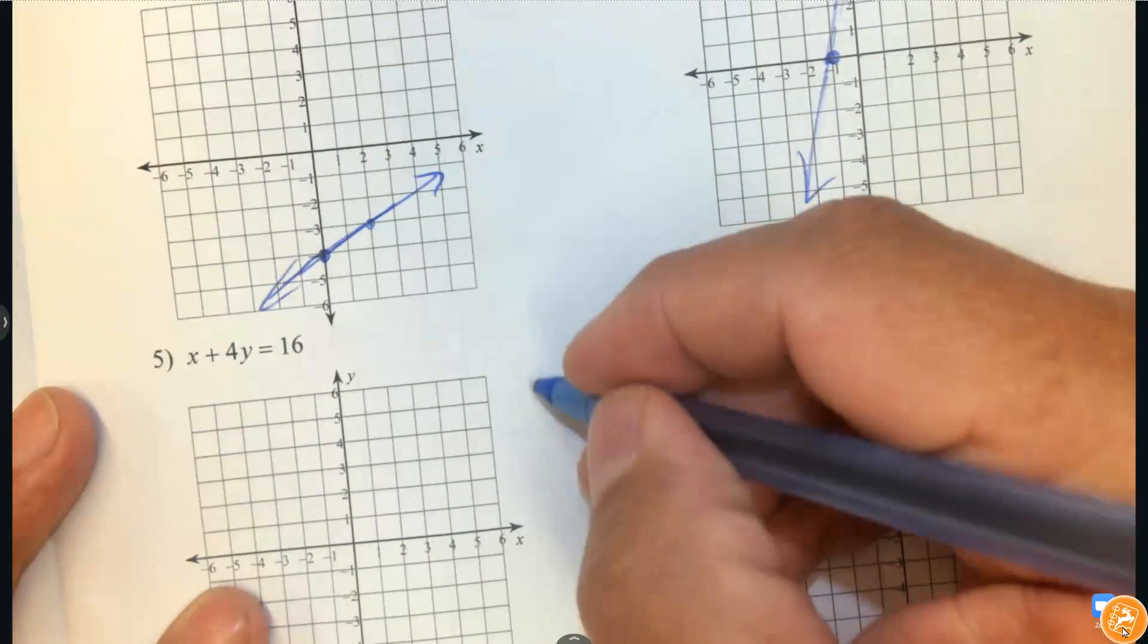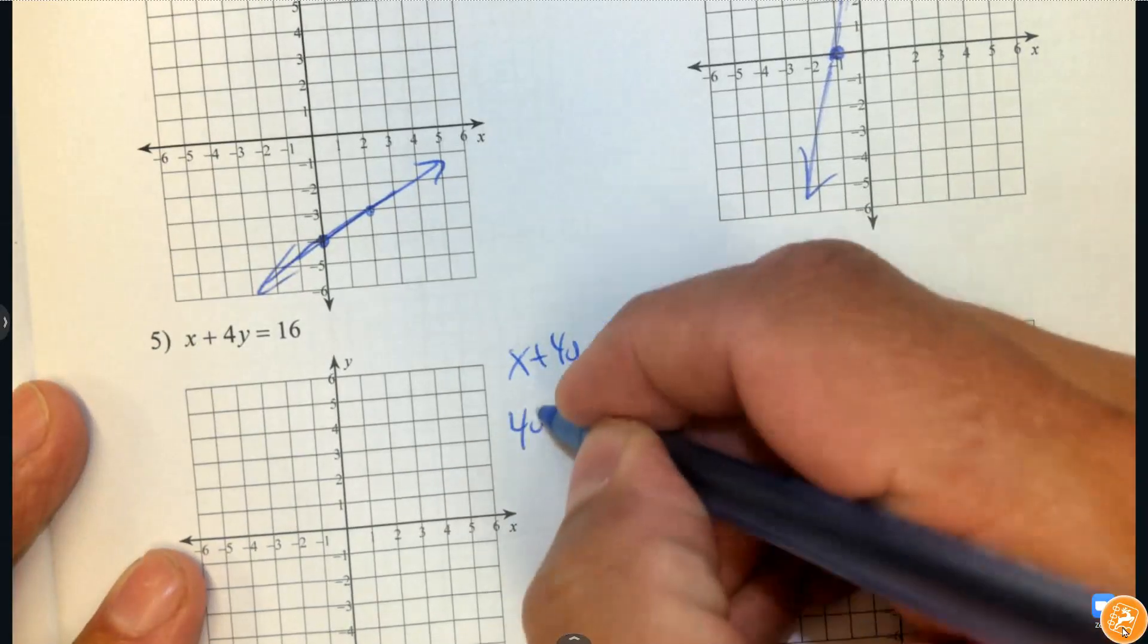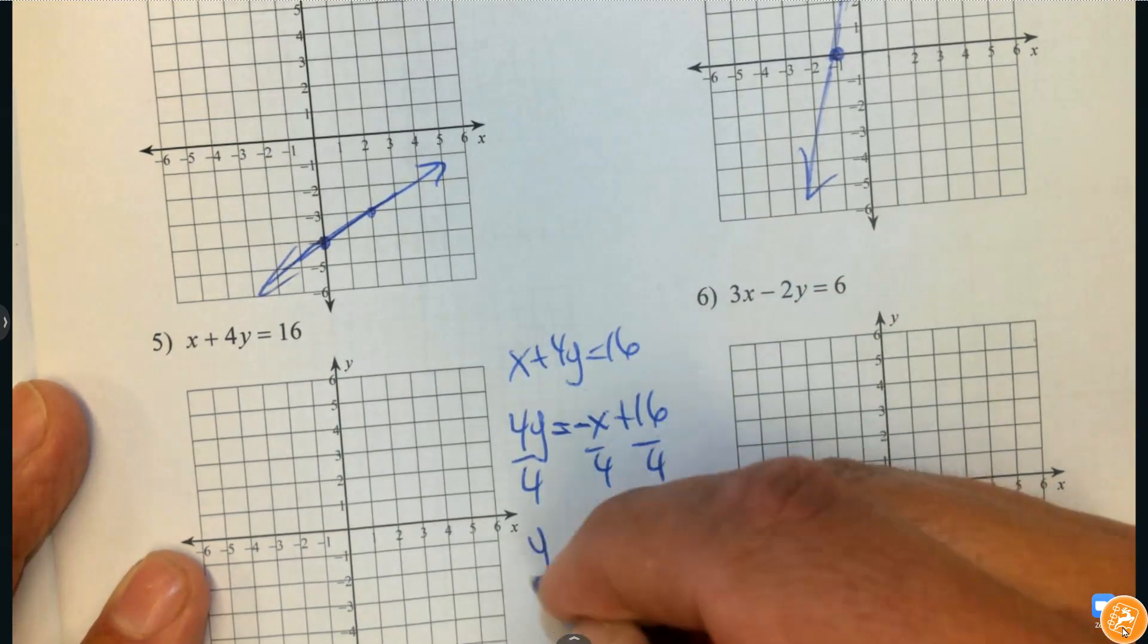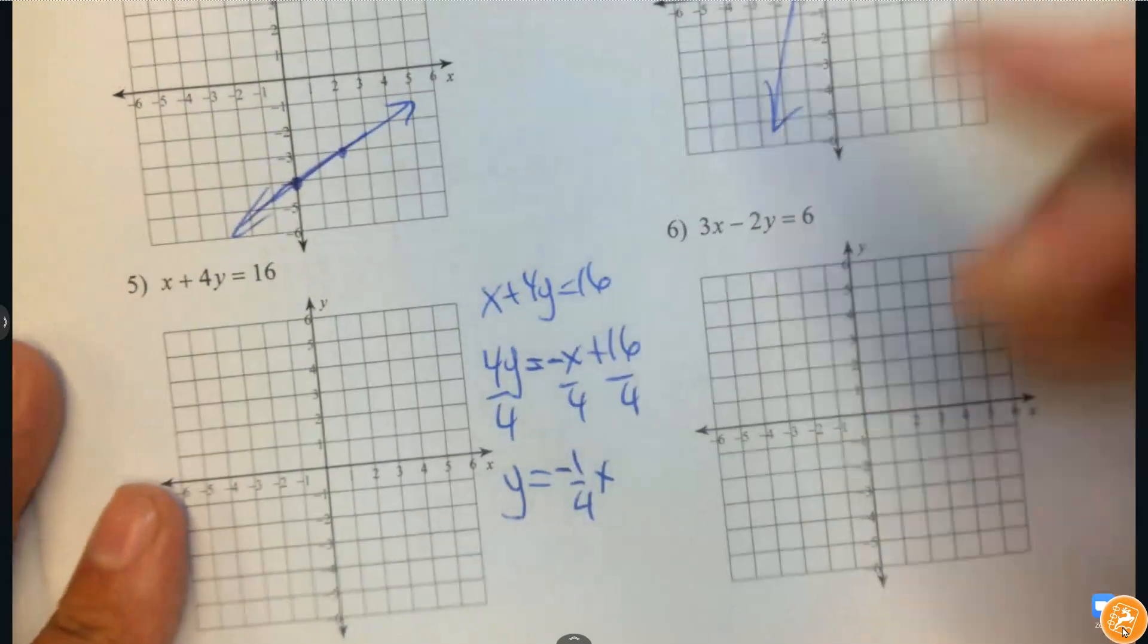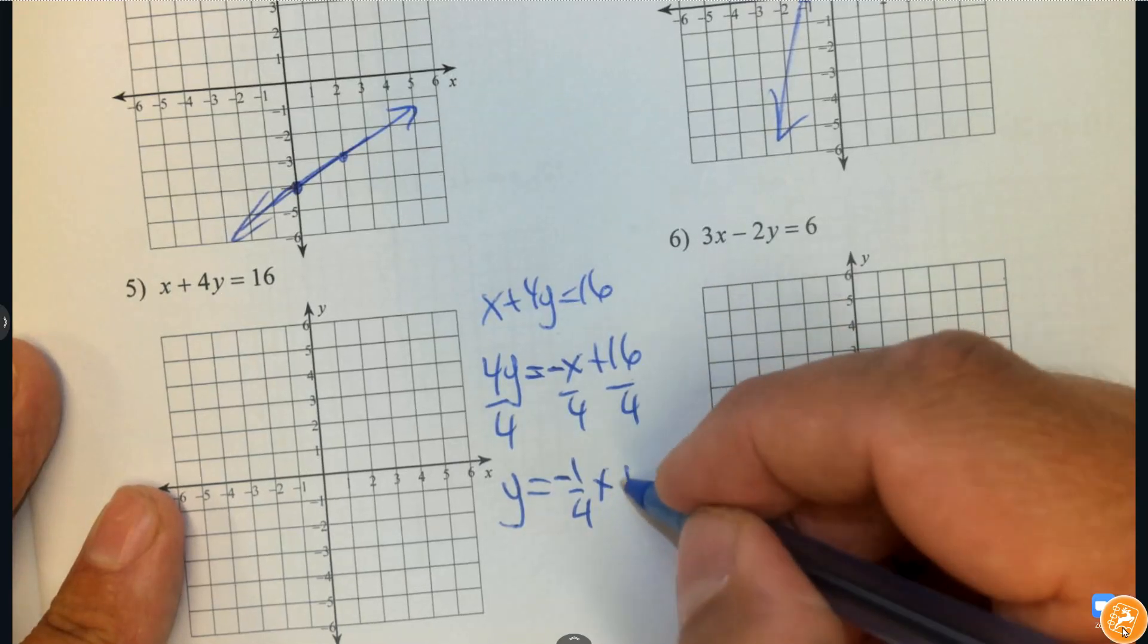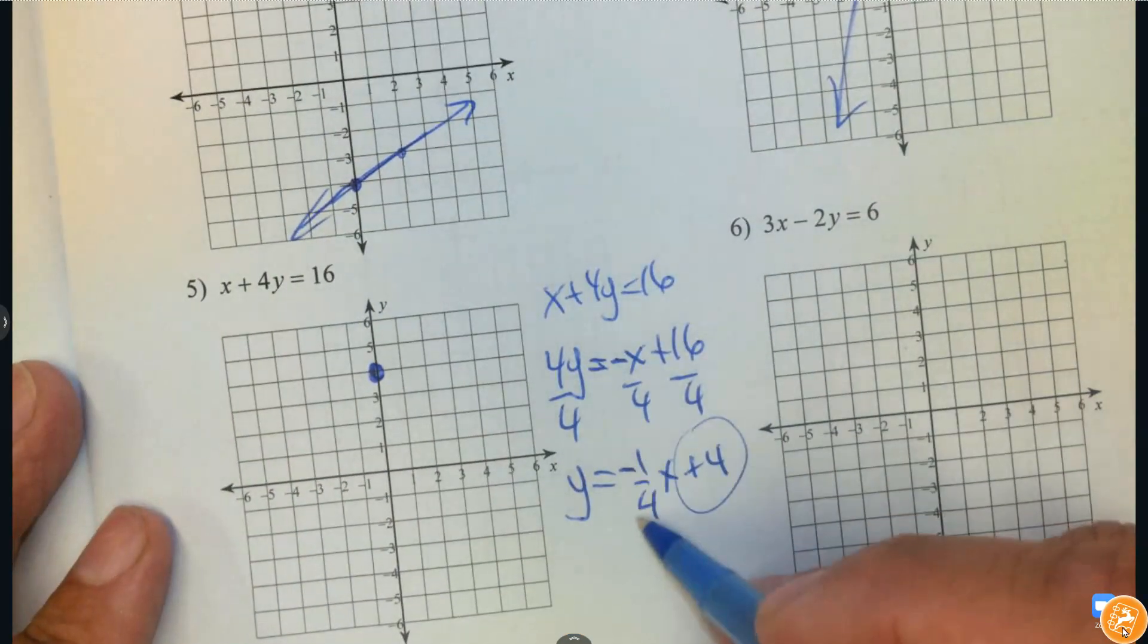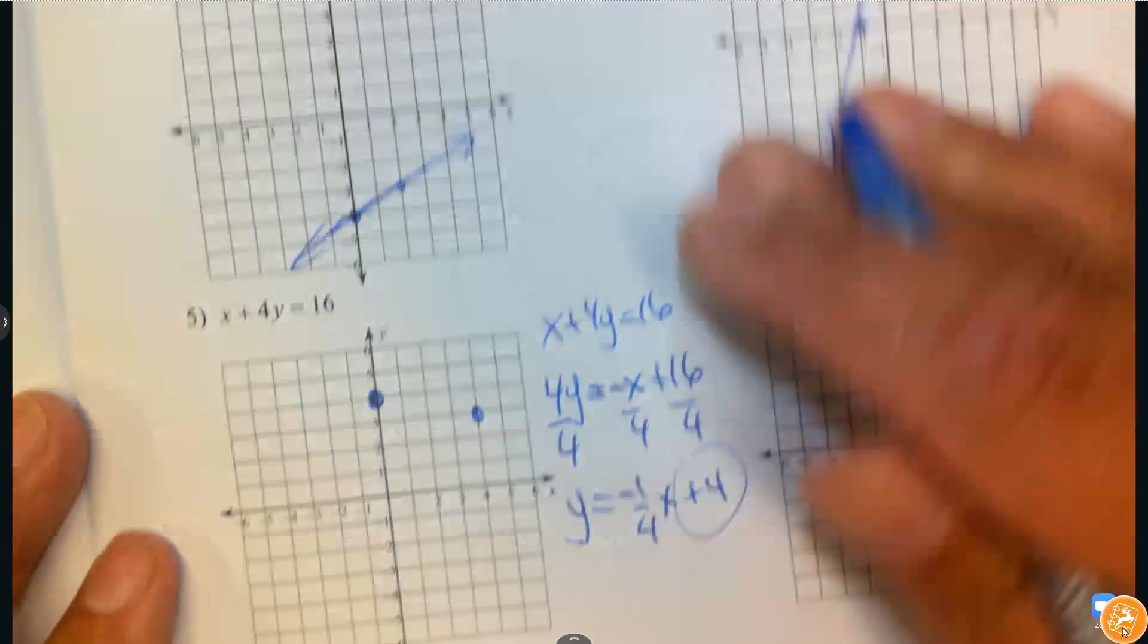Number 5 again. Let me show it again to you. So I'm going to subtract x to the right side. And I'm going to divide everything by 4. So I'm going to simplify it. The number I don't see there with x, I'm going to write it out explicitly. So that's negative 1 over 4. And then 16 divided by 4. And then I'm going to graph it. So I'm going to start at positive 4. And then the slope is down 1 and to the right 4. And then I'm going to draw my line.